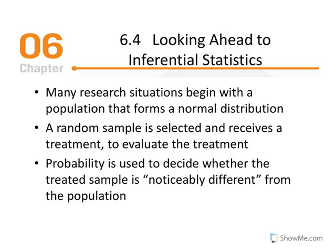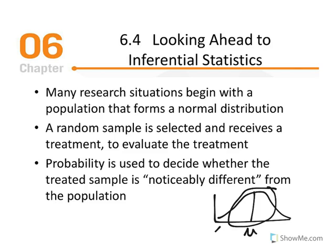Chapter 6, Probability, Part 5: Looking ahead to inferential statistics. Many research situations involve a population that forms a normal distribution. A random sample is selected and receives a treatment to evaluate its effect. We can now use probability to decide whether the treated sample is noticeably different from the population — meaning not close to the center. Noticeably different values would reside in the tails, since frequency is highest in the center.